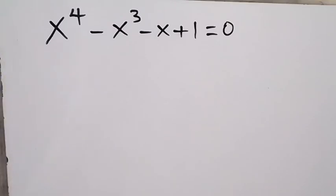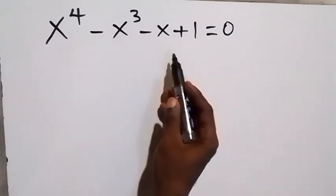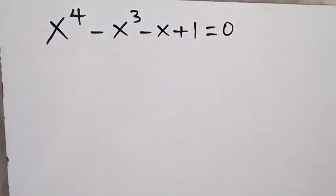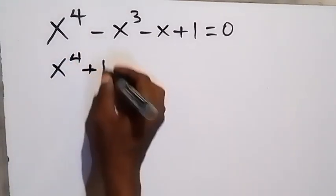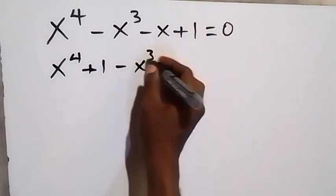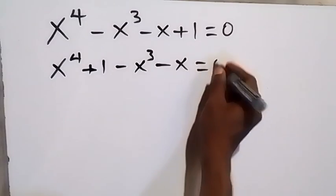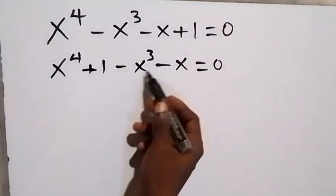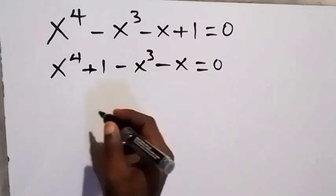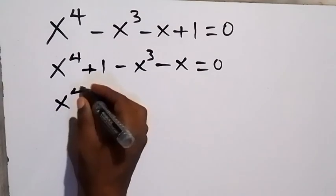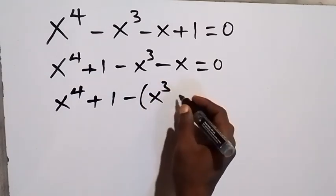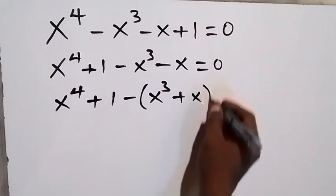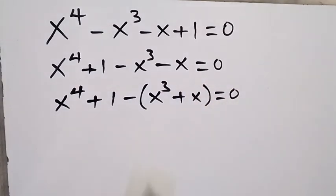Let's solve this problem: x raised to power 4 minus x raised to power 3 plus x plus 1 equals 0. Let's rearrange this equation as x raised to power 4 plus 1 minus x raised to power 3 minus x equals 0. From here, let's take minus out and bring the rest inside the bracket, so we have x raised to power 4 plus 1, then minus into bracket x raised to power 3, which becomes plus x.